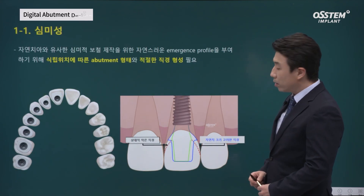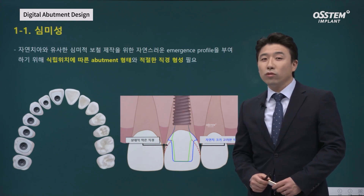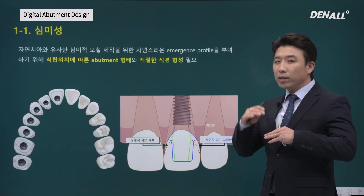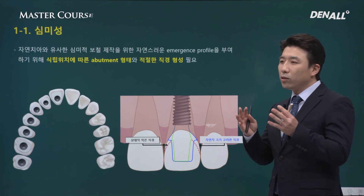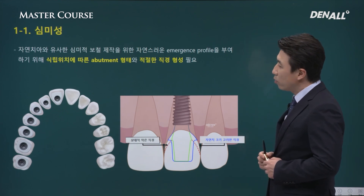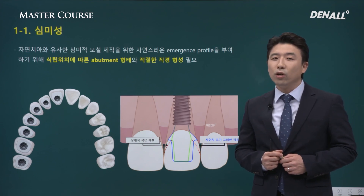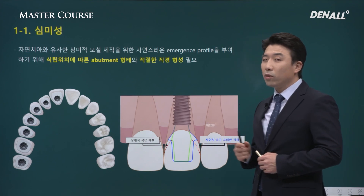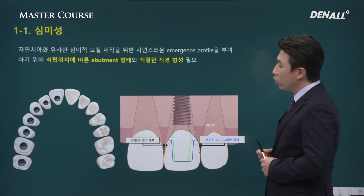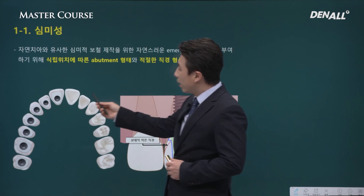Abutment design is crucial. It not only supports the crown but also influences profile creation. The profile of the implant superstructure is supported by the abutment. To provide a prosthesis similar to natural teeth, the shape of the abutment can be even more significant than the crown factor. Depending on placement position, we need to understand the natural teeth contour and characteristics.